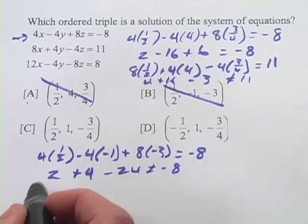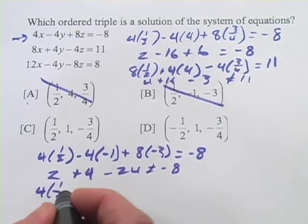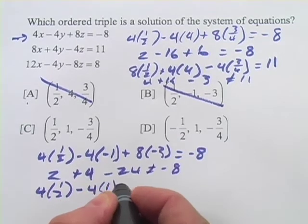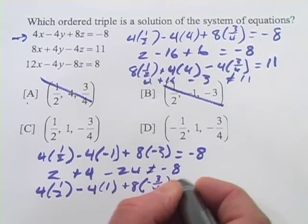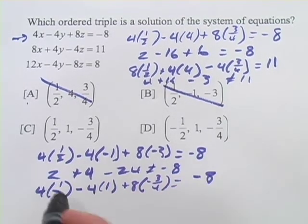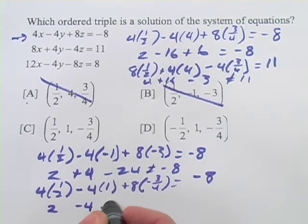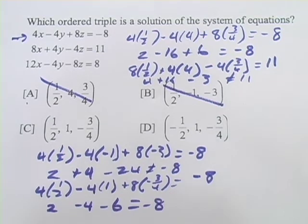Let's check C here. Again, we'll start plugging them into that first equation. 4 times 1/2, minus 4 times 1, plus 8 times negative 3/4, equals negative 8. And we get 2 minus 4, minus 6. And that does equal negative 8. So maybe C is it.